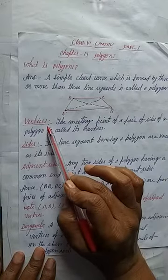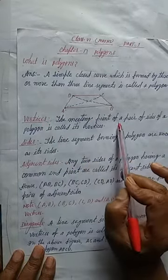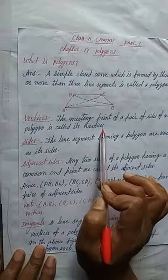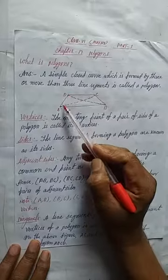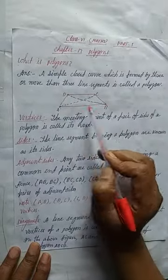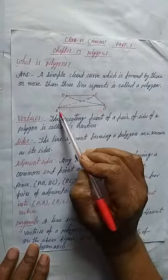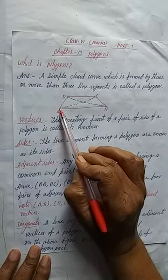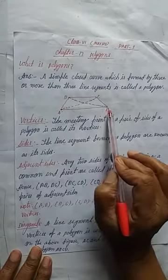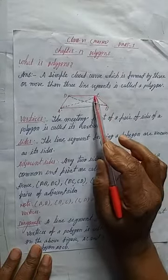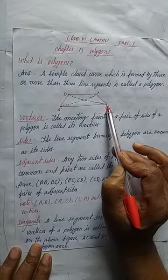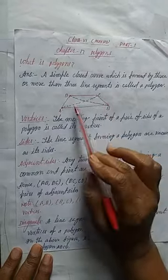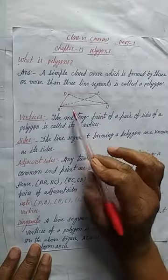Now I am going to explain one by one. What are vertices? The meeting point of a pair of sides of a polygon is called its vertex. Suppose line segment DA and line segment AB — their meeting point is A, so A is a vertex. Similarly, line segments AB and BC join at point B, so B is a vertex. So here are 4 vertices.